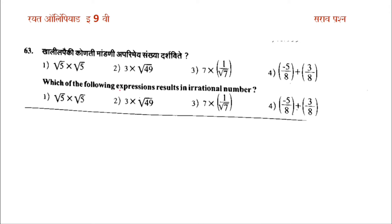Which of the following expressions result in an irrational number? Let's think about root 5 into root 5. Root 5 into root 5 squared equals 5, which is not an irrational number — this is an integer, which is not an irrational number.